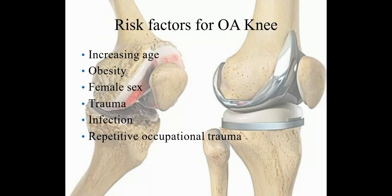Risk factors for osteoarthritis of the knee joint include increasing age, as degenerative changes increase as the patient ages. Obesity and overweight lead to more wear and tear of the knee joint, potentially requiring TKR later in life. Female gender is more prone to osteoarthritis compared to males. Trauma, infection, and repetitive occupational trauma are also factors that cause degenerative changes and osteoarthritis of the knee joint.